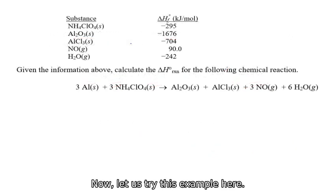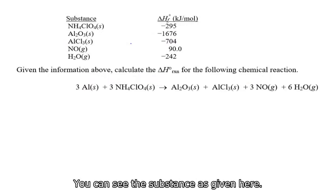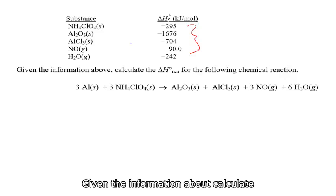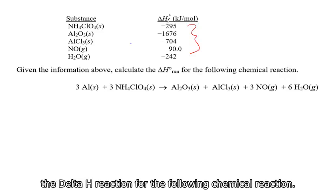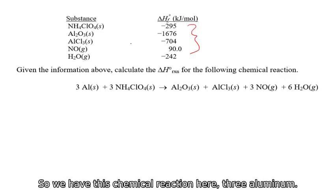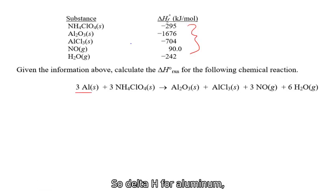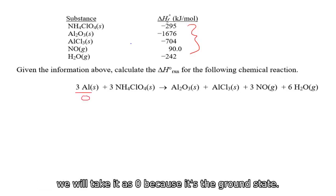Now let us try this example here. You can see the substances given here and delta H value for delta H formation values are given here. That is the way the problem will look like. And given the information above, calculate the delta H reaction for the following chemical reaction.